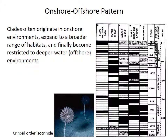So these isocrinids have this sort of history: they first appear in onshore habitats in the Triassic, but don't seem to be present in deeper water environments. They then expand to have a broad range of habitats from shallow all the way to deep in the Jurassic. And they finally become restricted only to offshore habitats — absent from shallower water environments in the later Cretaceous and especially in the Cenozoic.